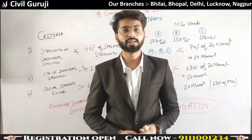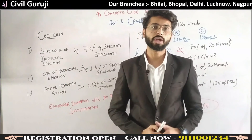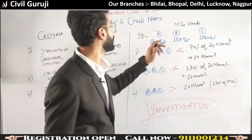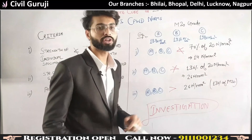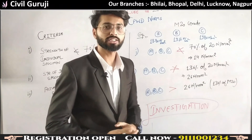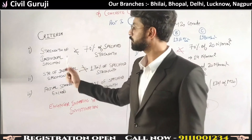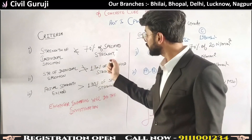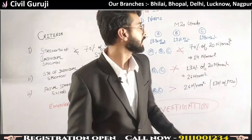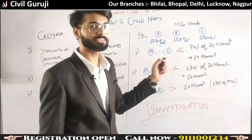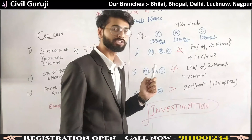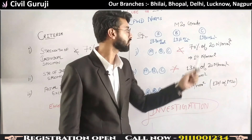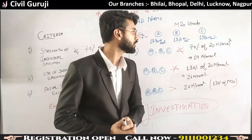Now let's see how we implement these criteria in an actual example. Suppose we have a concrete grade of M20. Our first criteria says the strength of an individual specimen cannot be less than 70% of the specified strength. Let our individual specimens A, B, and C have strengths of 18.80 N/mm², 19.50 N/mm², and 19.80 N/mm².